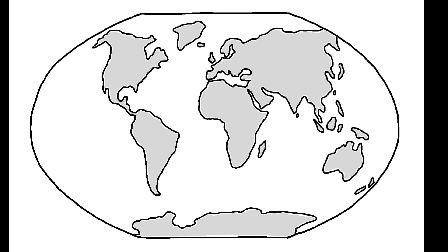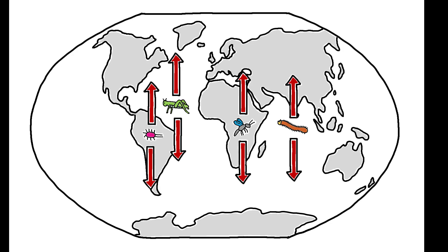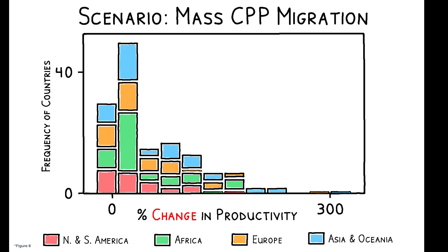Finally, climate change may reduce the ecological dissimilarities between countries as rising temperatures lead to a systematic poleward shift in the habitable range of CPPs. The impact of this change on the direction of innovation is predicted to have a positive effect on productivity, with the benefits spread relatively evenly across space. Thus, while the overall effect of CPP movement on productivity may not be positive, some of the direct negative effects may be offset if climate change coordinates international research on a more common set of threats.